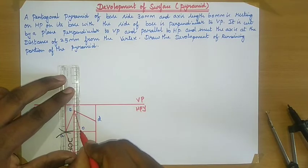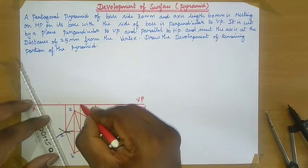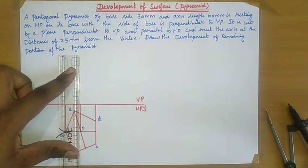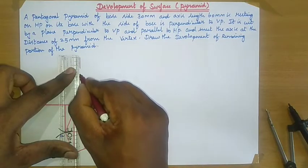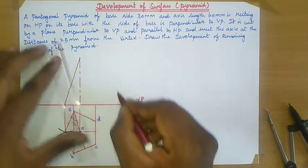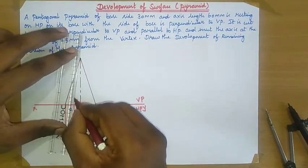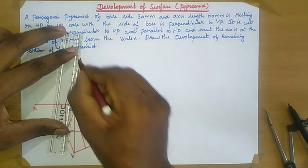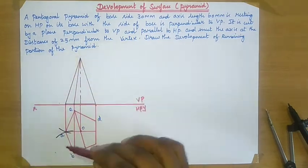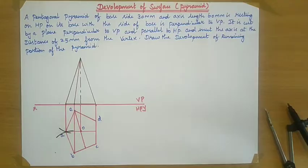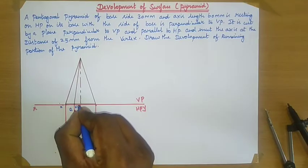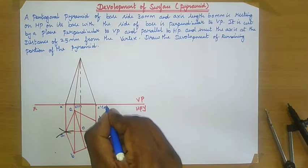Extend the projector lines. With this pointer at center, take an axis length of 60 mm. Draw a line for the front view section of the pentagonal pyramid. Extend the slant height projectors and again extend the slant width projectors. Now we have obtained the front view section and top view section.